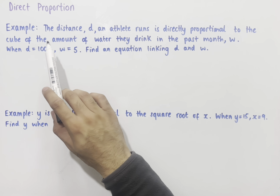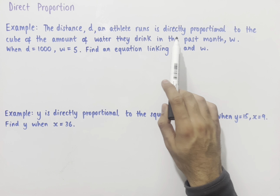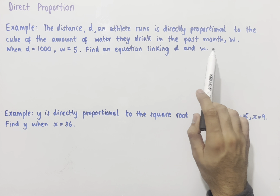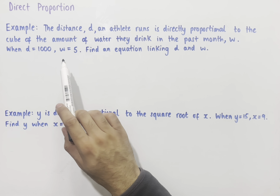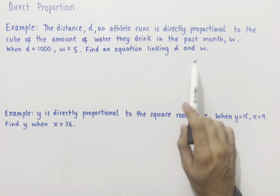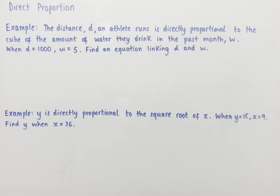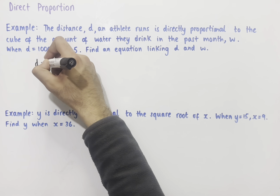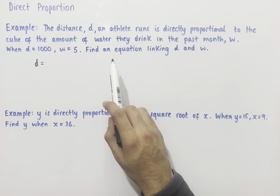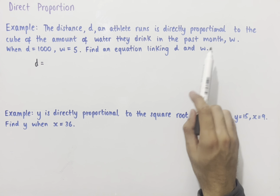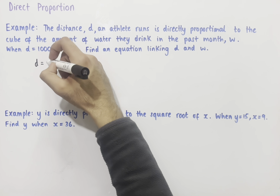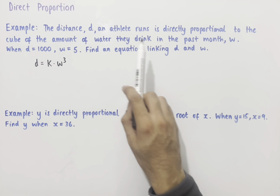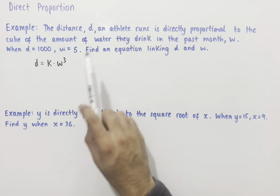The example says: the distance d an athlete runs is directly proportional to the cube of the amount of water they drink in the past month, w. When d equals 1000, w equals 5 — find an equation linking d and w. We can first make an equation linking the two variables: d equals some multiple of the cube of w. We'll call that multiple k, so d equals k times w cubed, since d and the cube of w are directly proportional.